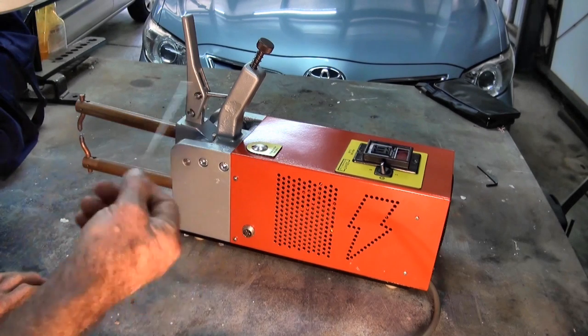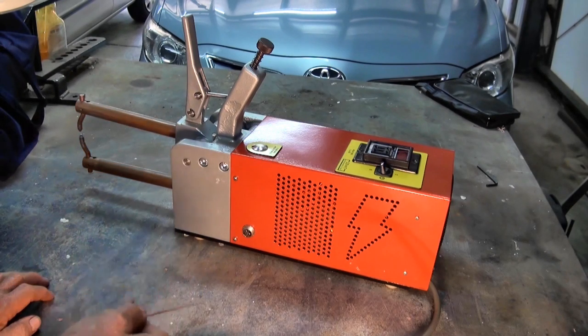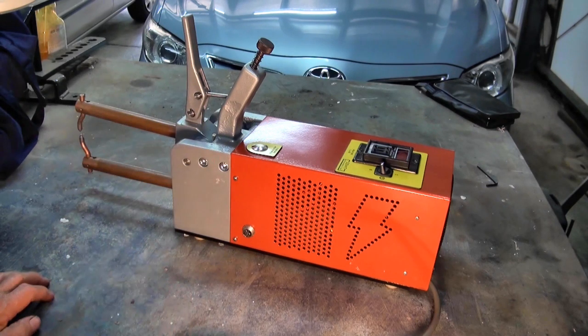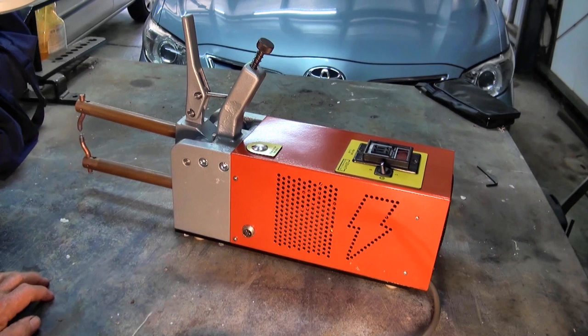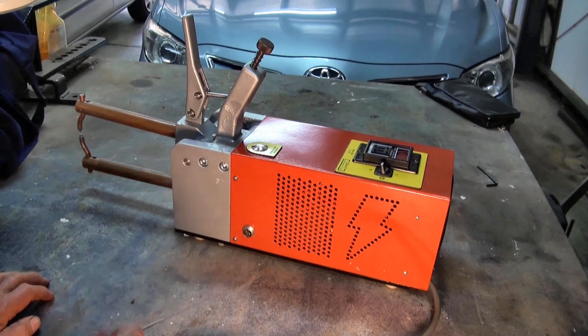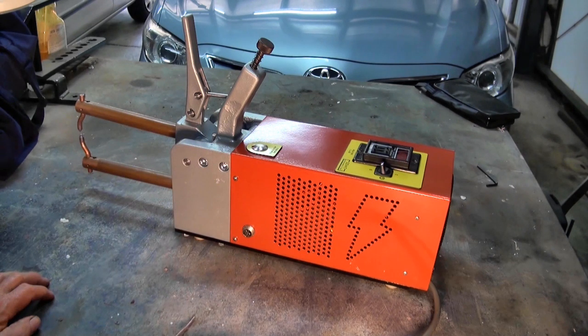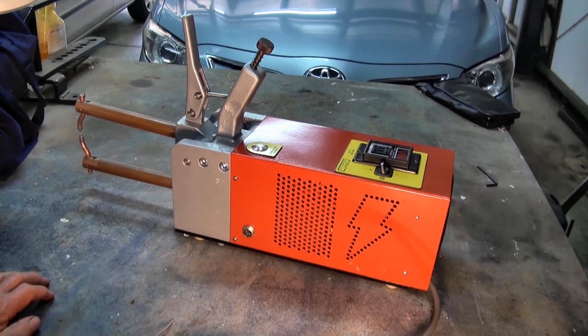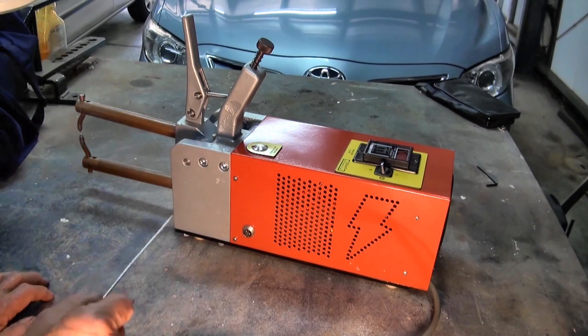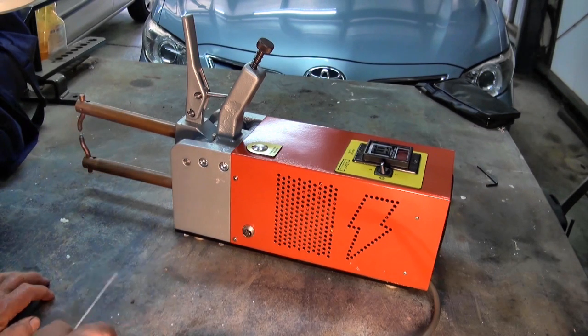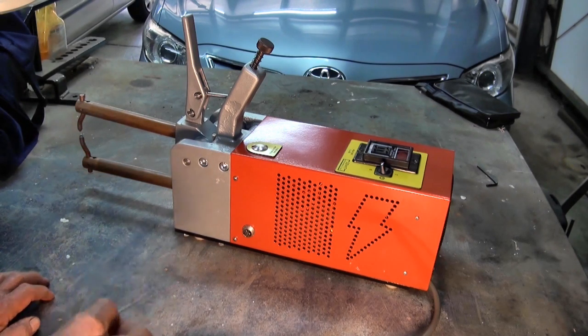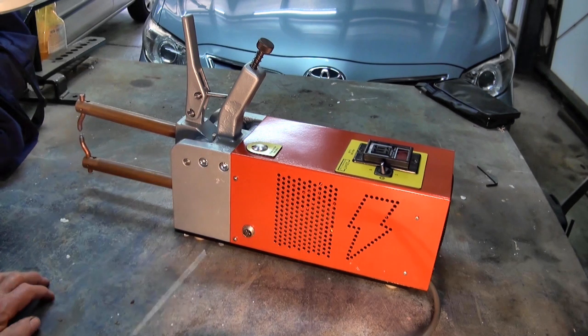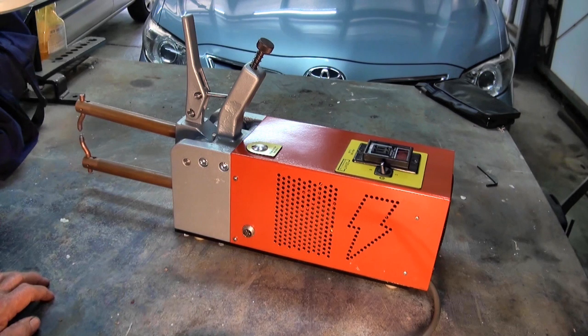Now, a YouTube user got in touch via the comments and suggested that the method I was using to modify the transformer wasn't the most efficient way of doing things. And here I should give a shout out to Matt. His channel is called Matt's Awesome Stuff. He's got some really excellent videos showing you not just how to modify a microwave oven transformer but about transformer theory in general.